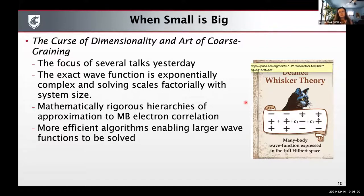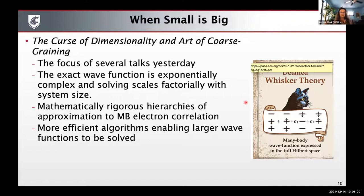With respect to this first section, when we talk about many-body effects and electronic structure methodologies, really you have two things that are highly operative. One is the curse of dimensionality, in the sense that the exact wave function becomes tremendously complex as you go to large system sizes. But there are these mathematically rigorous hierarchies associated with how we can approximate many-body electron correlation. There were so many talks about efficient algorithms that might enable us to tackle larger and larger wave functions.